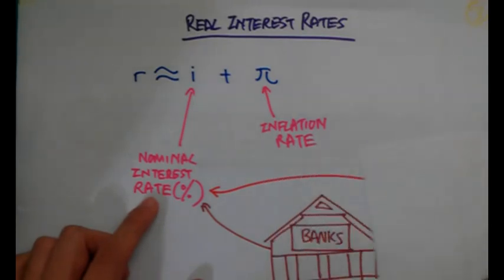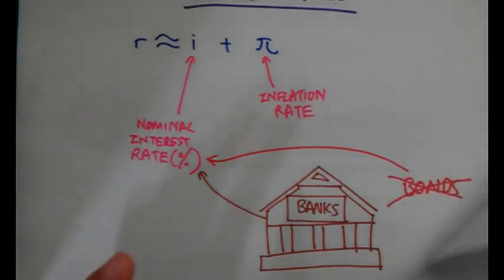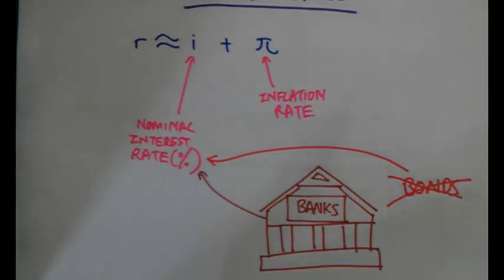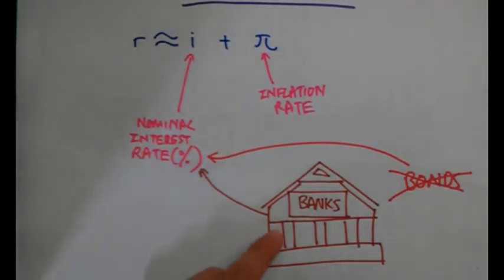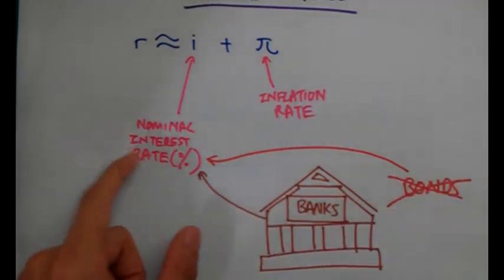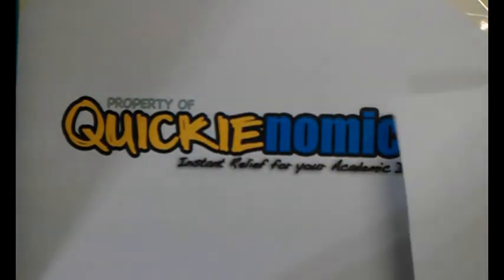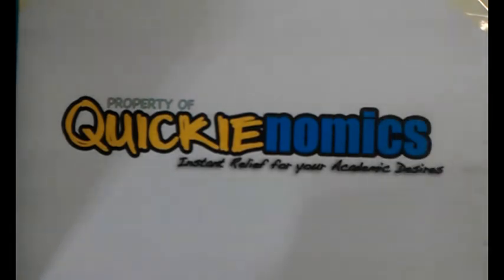The nominal interest rate is the rate at which banks pay you for putting your money in the bank. It is not referring to the returns that bonds give you. At the introductory economics level, we look at bonds appreciating in value when sold at a later period, not the interest they pay. The nominal interest rate here refers to the interest the bank gives you for depositing your money — essentially, the bank is borrowing your money and paying you interest for it.